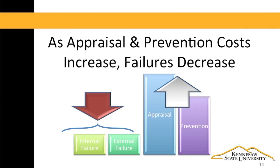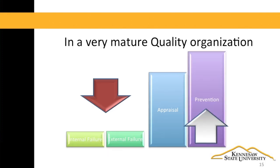As the organization continues to mature in its quality efforts, they will start to spend more on prevention. A robust system of prevention and appraisal will drive down the costs of both internal and external failures. As an organization continues to mature, they might focus even more on prevention. With better prevention methods in place, it may be able to reduce the scope or frequency of inspection and reduce appraisal costs. Remember that some of the prevention costs, like error-proofing, are one-time costs.